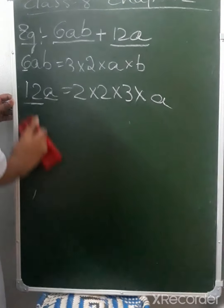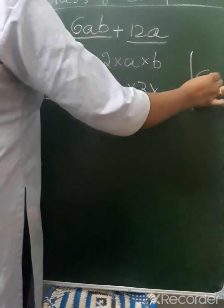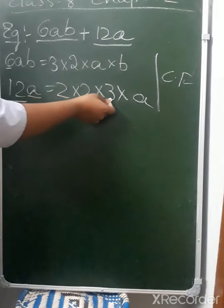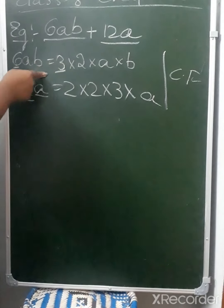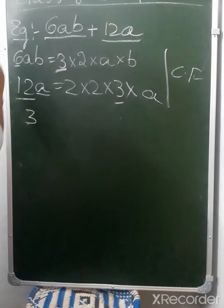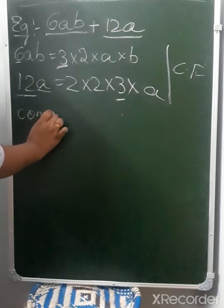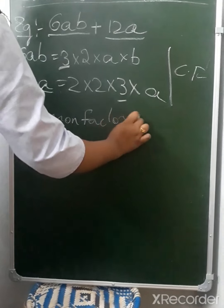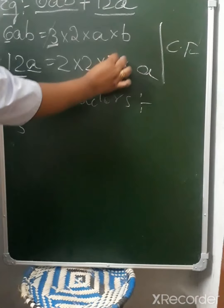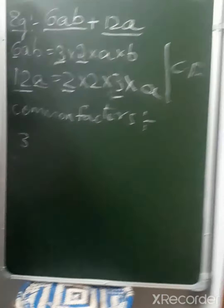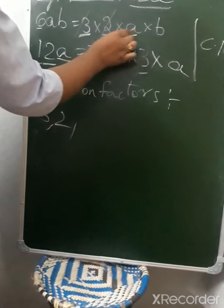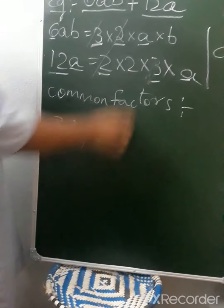Now let's find the common factors in both terms. Observe: 3 into 2 into a into b, and 2 into 2 into 3 into a. Here 3 is common in both terms — so 3 is a common factor. After identifying 3, we see 2 is also common in both terms — so 2 is a common factor. And a is also a common factor in both terms.